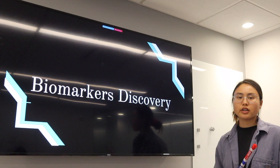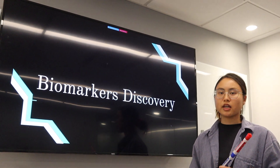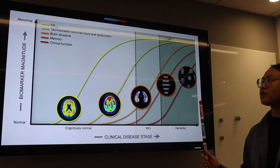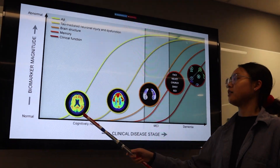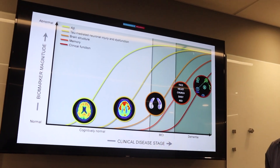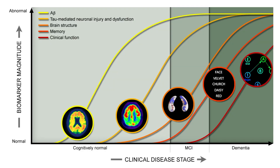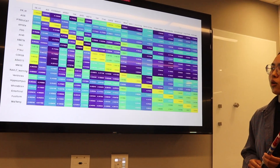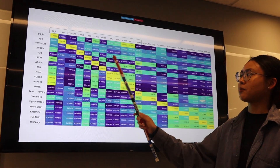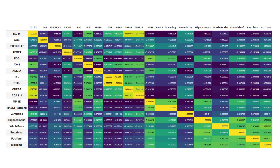The goal of the second part of our project is to find biomarkers for early diagnosis of Alzheimer's disease. This slide shows five biomarkers and how they correlate to disease progression over time, including A-beta and tau-mediated neuronal injury. Earlier detection of these biomarkers allows earlier diagnosis. A correlation matrix shows that variables including APOE4, AV45, tau, P-tau, CDR-SB, ADAS13, MMSE, RAVLT learning, ventricles, hippocampus, entorhinal, mid-temporal, and fusiform could have a strong correlation with Alzheimer's disease prediction.